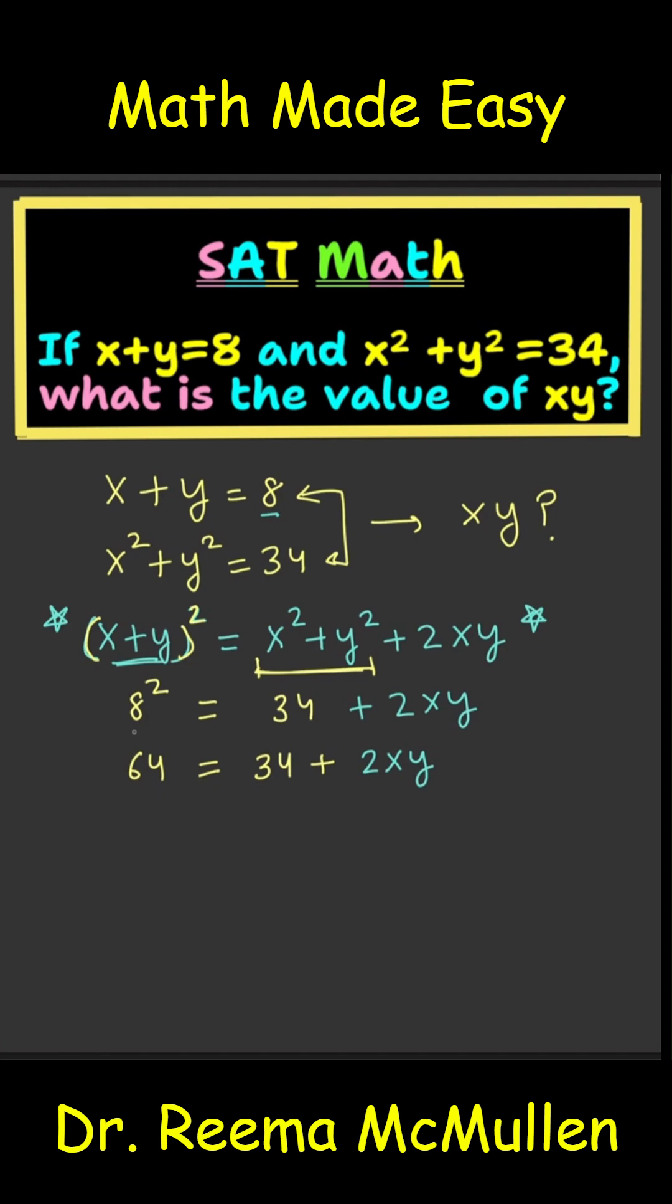Well, let's go ahead and subtract 34 from both sides of the equation. And when we do so, on the left side, we get 30. Right side, 34 minus 34 cancels out. And we are left with 2xy.